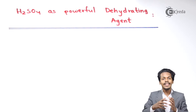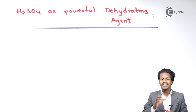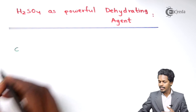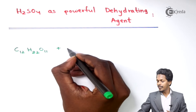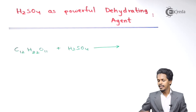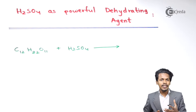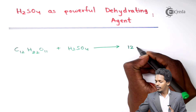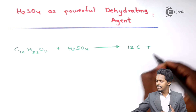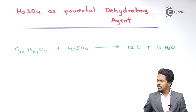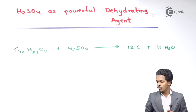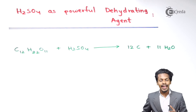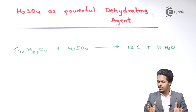H2SO4 also acts as a good dehydrating agent with carbohydrates. For example, if we take sugar — C12H22O11 — and treat it with H2SO4, the reaction is so devastating that we get 12 moles of carbon along with 11 moles of H2O. This shows how H2SO4 removes all water content, leaving only carbon.